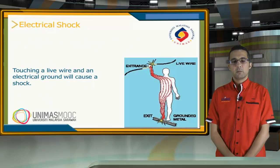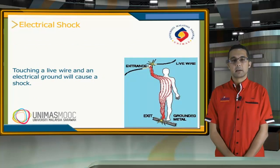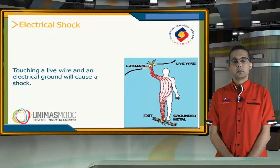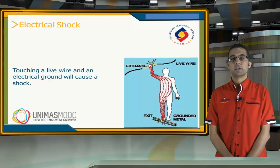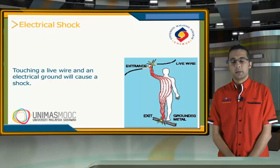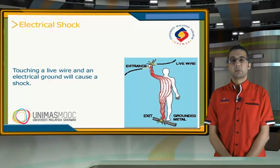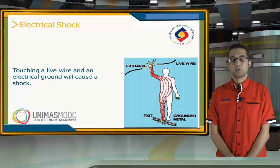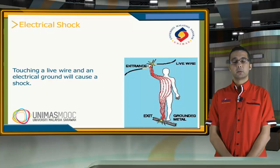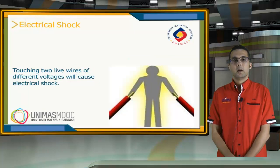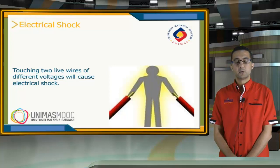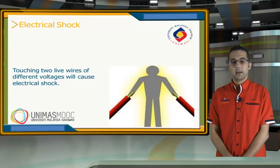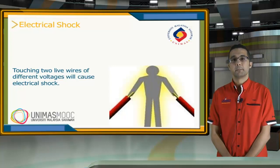Touching a live wire and the electrical ground will cause electrical shock, because your body will become a conductor allowing electrical current to pass through it. Also, touching two wires with different voltages will cause electrical shock to your body.